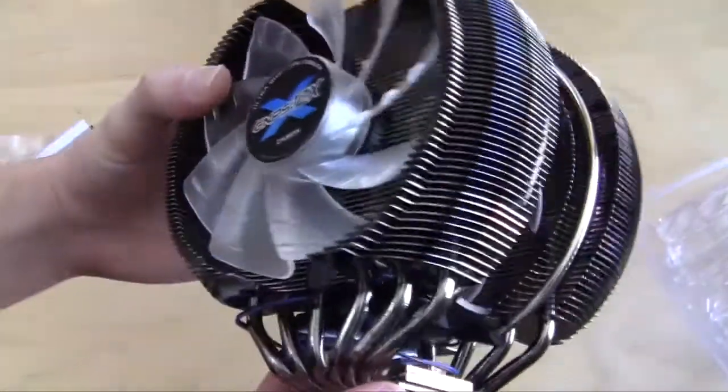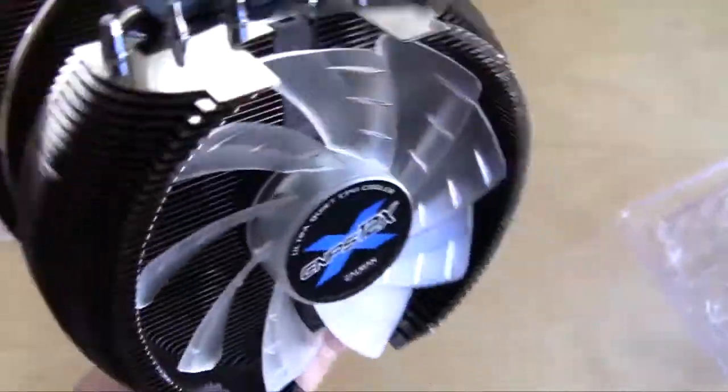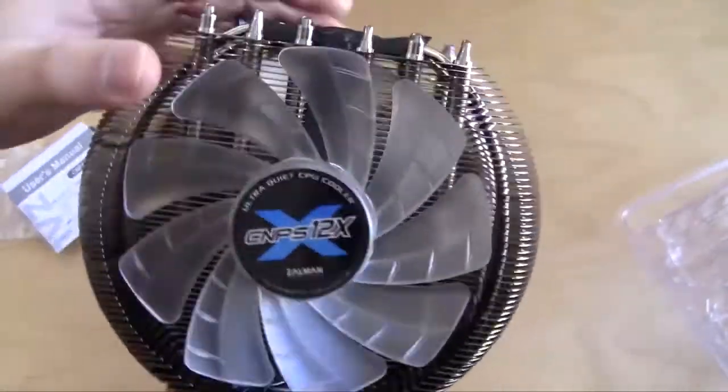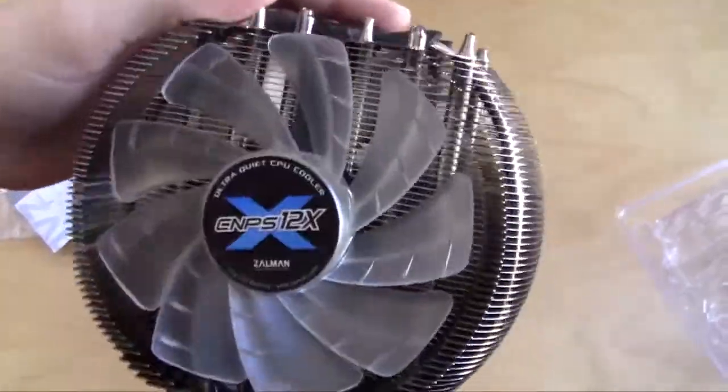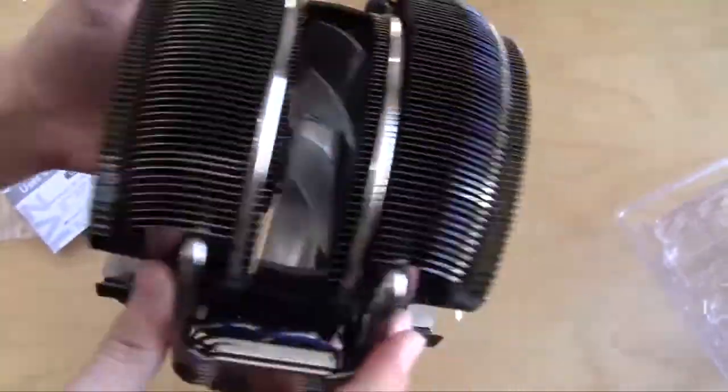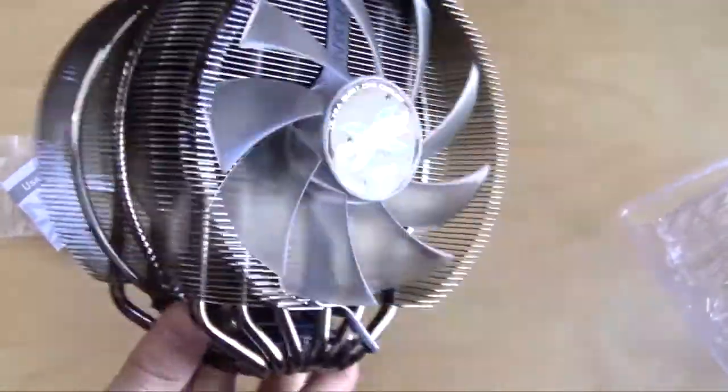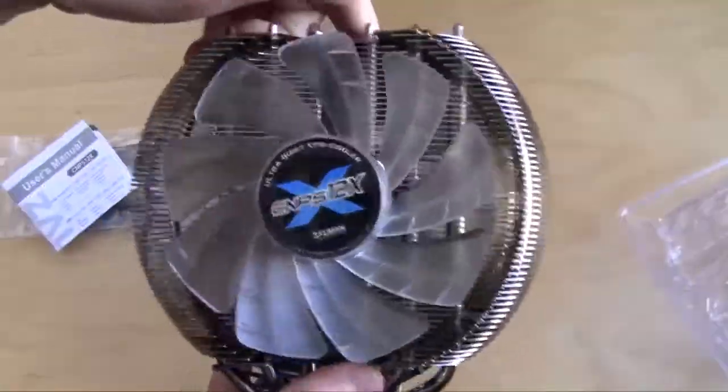The CNPS 12X is a very large heat sink, one of the largest as I said that we have seen. It comes with actually three fans—that's something you normally don't see in a CPU cooler. So you have one here on the front, one in the center, and then one on the back. These fans are 120 millimeter fans with a maximum speed of 1200 RPM.